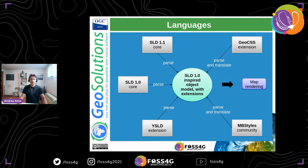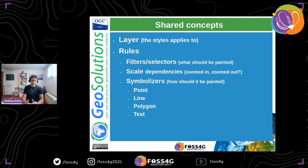Let's start with a quick tour of the styling languages — plural — because GeoServer supports multiple styling languages. In the beginning we supported only SLD 1.0 core. The in-memory representation used by the rendering engine is still an object model strongly inspired by SLD 1.0. We also have support for SLD 1.1, YSLD, MB Styles, and GeoCSS, all of which translate their syntax into that common object model. They all share the same concepts: layers, rules with filters or selectors, scale dependencies, and symbolizers for points, lines, polygons, and text.